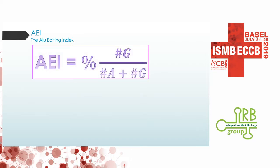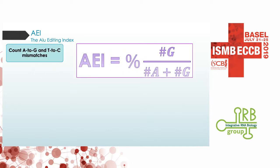We take all of the observed presumed editing mismatches over the whole genome — all the ALU repeats — and we divide this number by all of the observed adenosines, both canonical and mismatch, or presumably edited in these regions. You actually get a number which represents the weighted average of editing across ALUs in the genome, and that's a very simple way to do that.